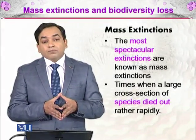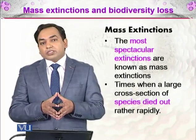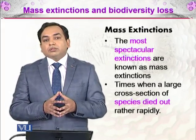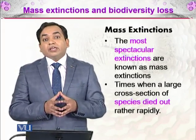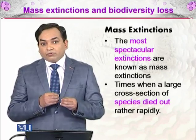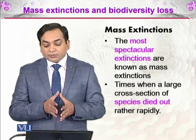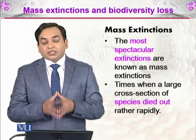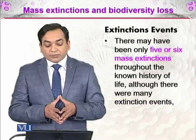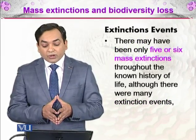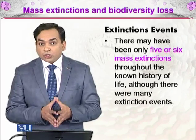What are mass extinctions? The most spectacular extinctions are known as mass extinctions — when species are dying all across the globe in large numbers within a very short time period. Times when a large cross-section of species dies out rather rapidly is called mass extinction. There may have been only 5 or 6 mass extinctions throughout the known history of life, although there were many extinction events. Major extinctions numbered 5 or 6, and people may debate the exact number.